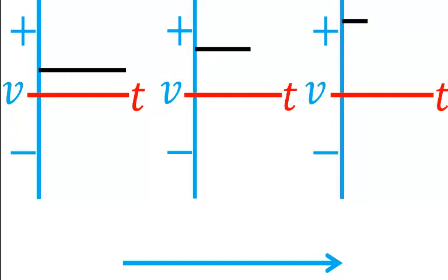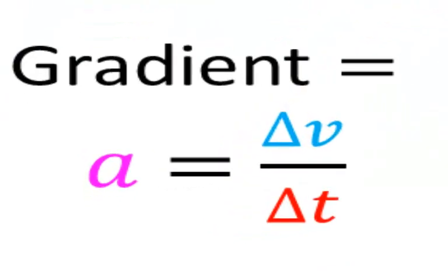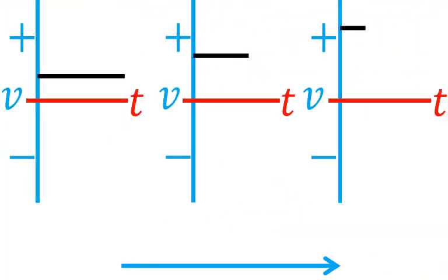Now let's speak about the gradient of these three graphs. All of them have a zero gradient, because they are flat. They have no gradient. The gradient of a velocity time graph tells us acceleration. The acceleration for all of these graphs is zero. It's not accelerating, because the motion is uniform.